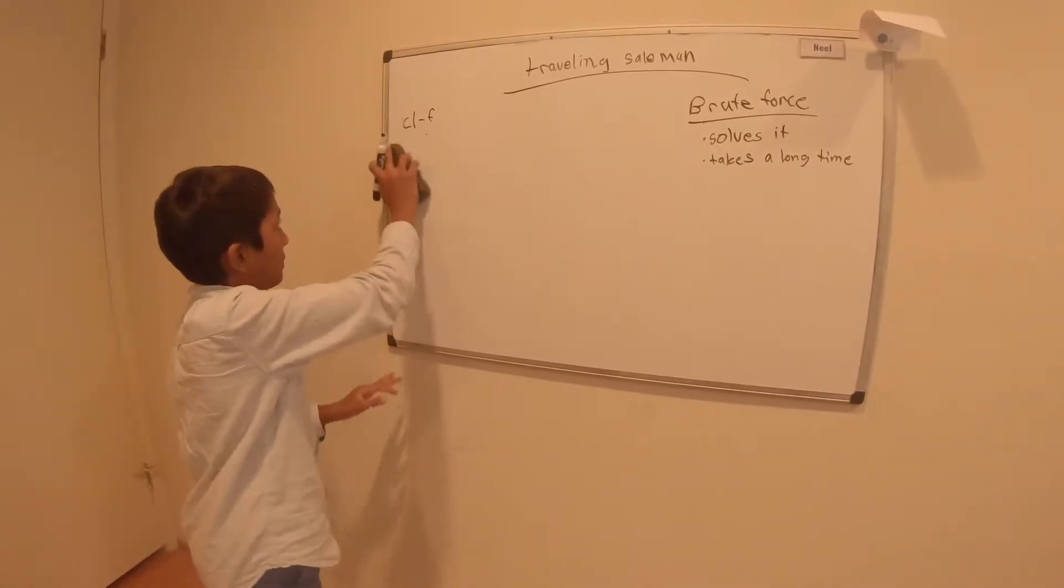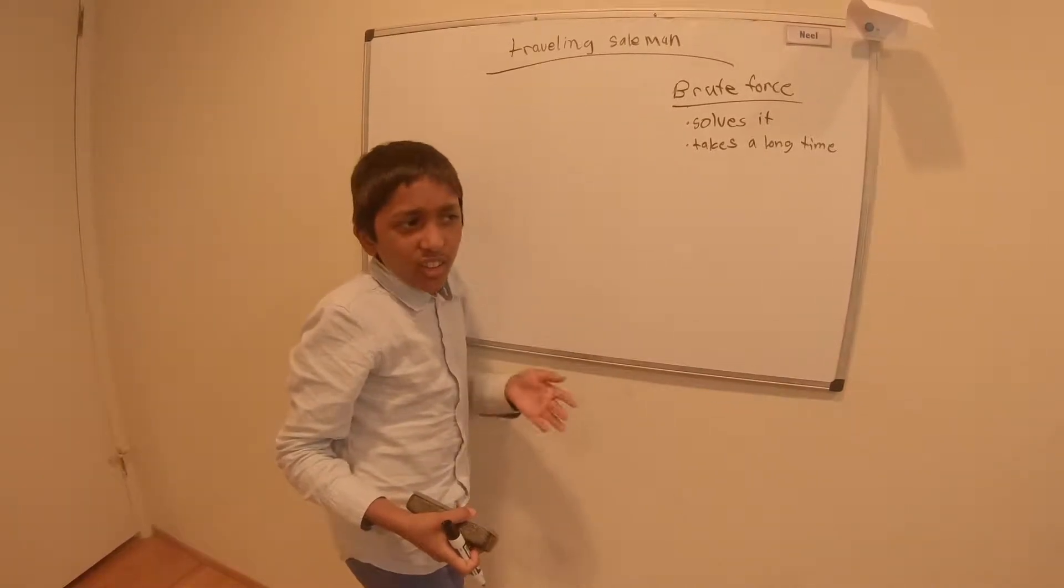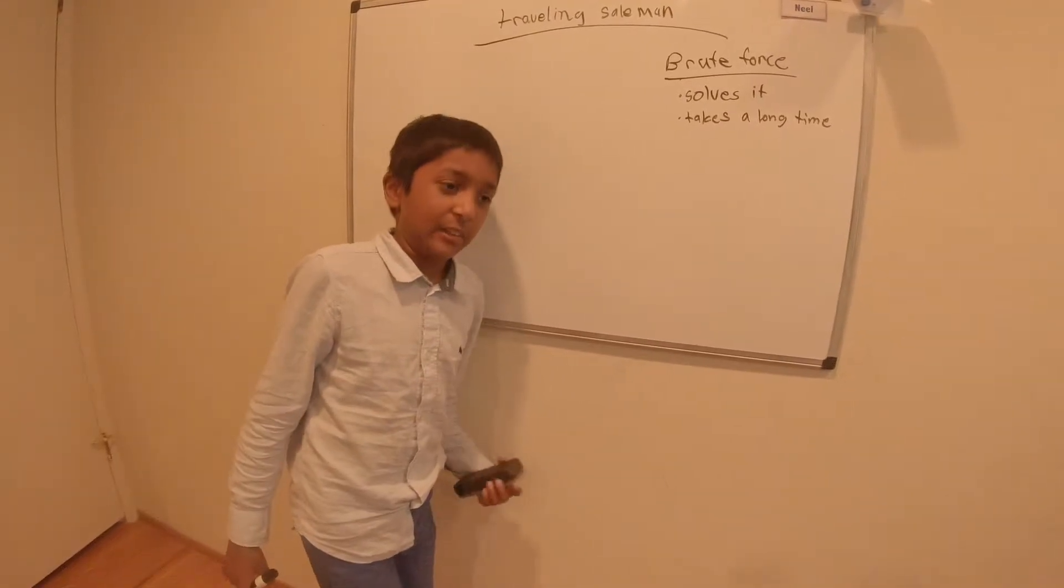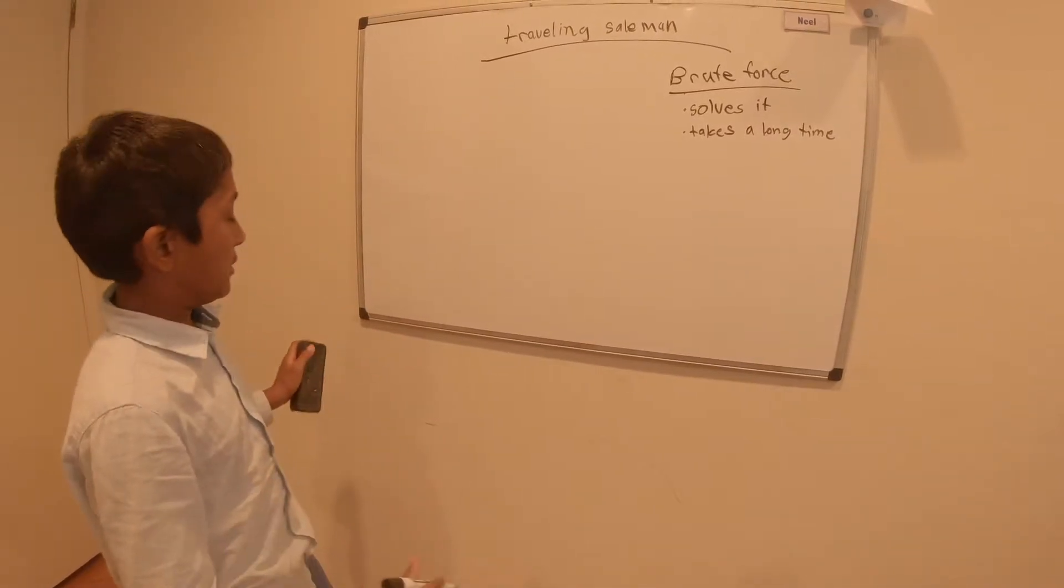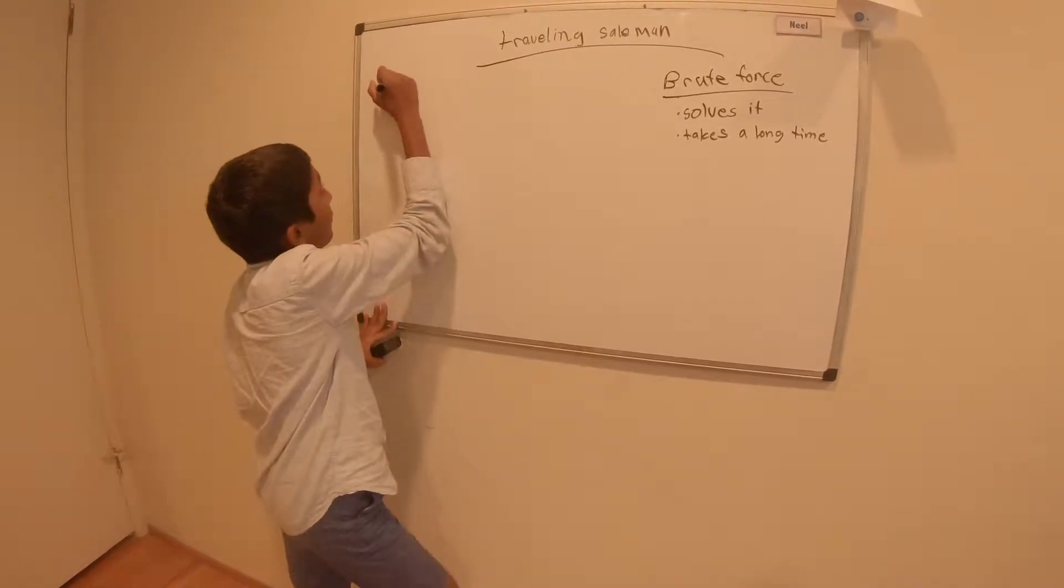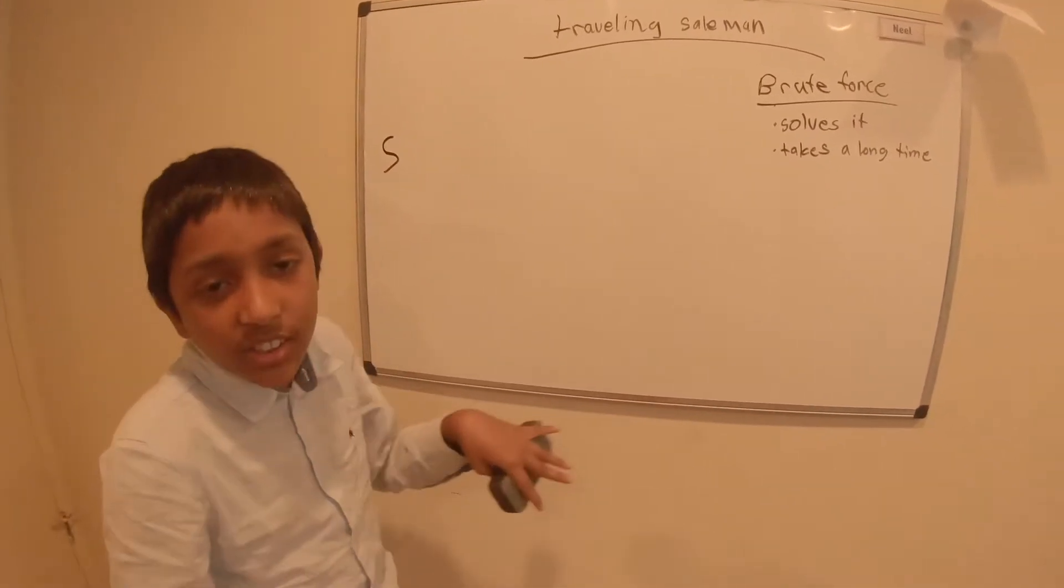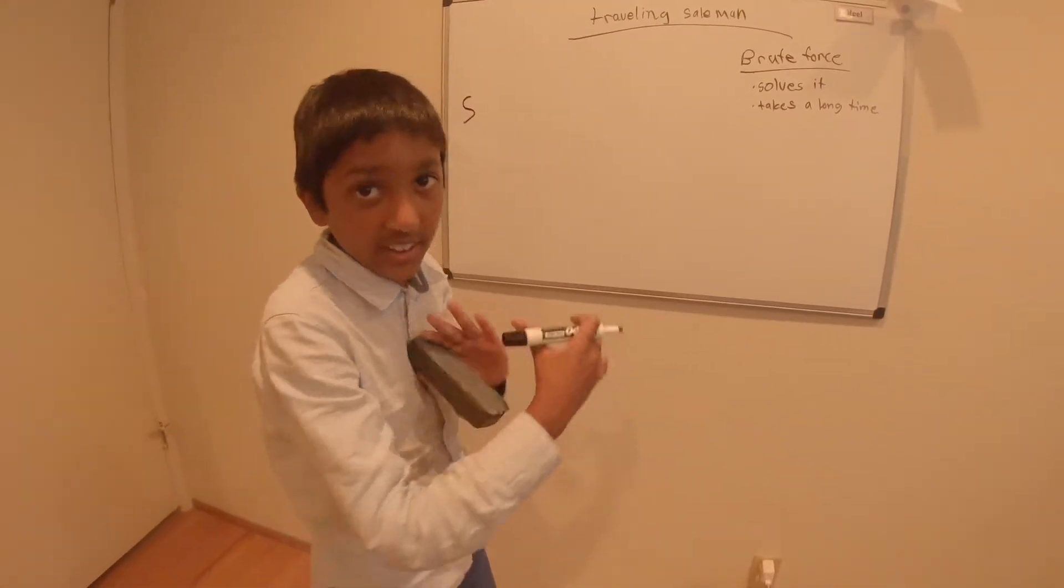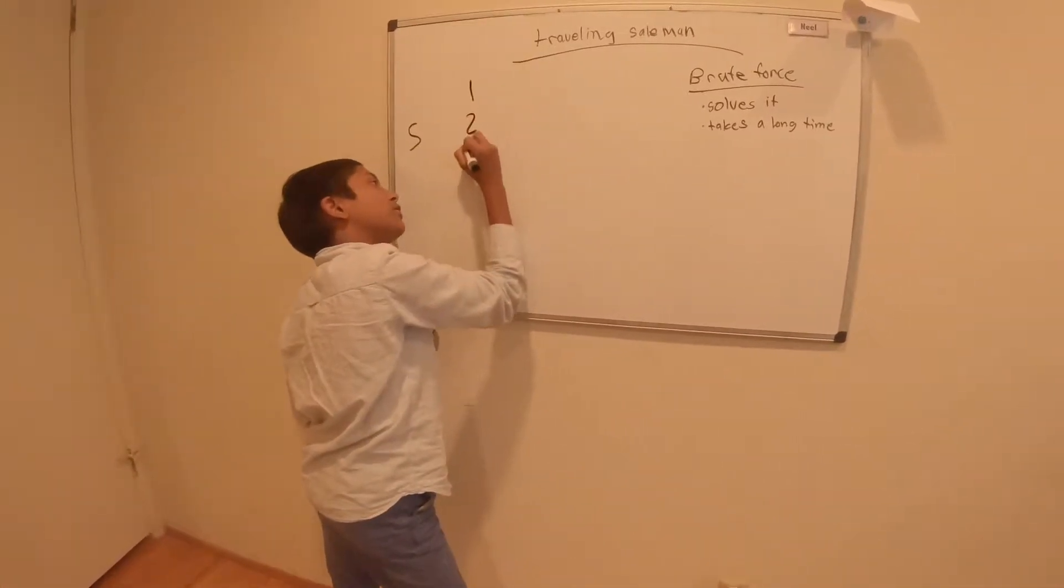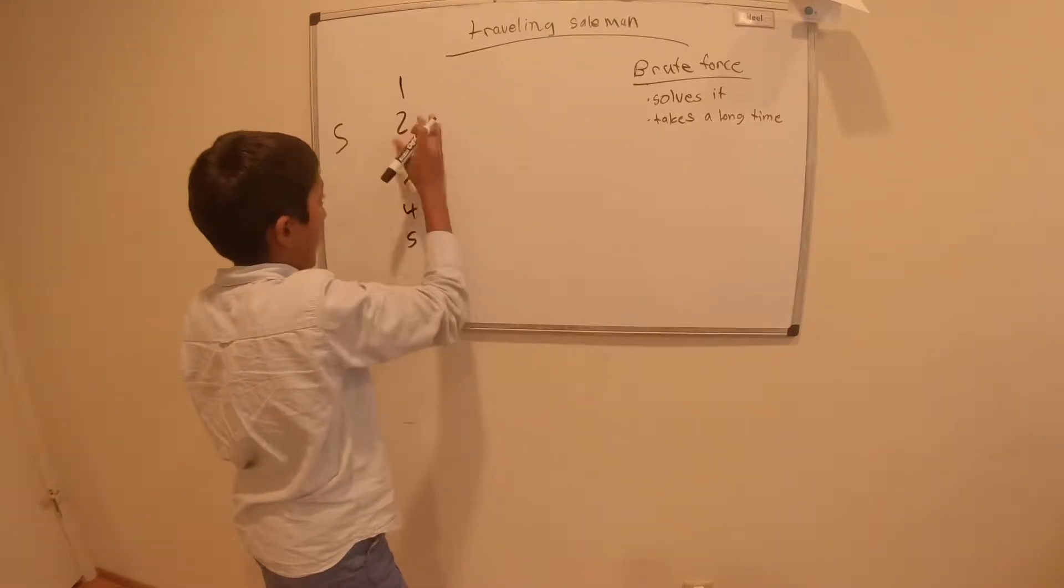But there's another one that's a lot different and it's less accurate, but it's gonna take you less time. So this is what you do: you have your points, let's say you have one starting point—this is your starting point—and then you have place one, place two, place three, place four, and place five.